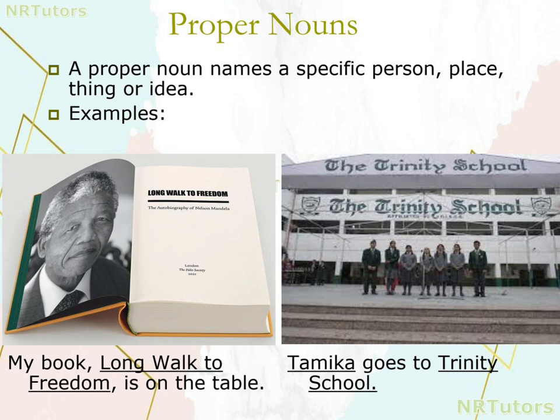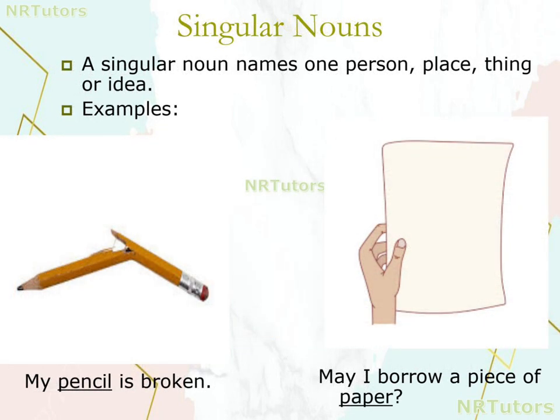The next one is singular nouns. A singular noun names one person, place, thing, or idea. Singular noun हमें एक ही person, place, thing, या idea के बारे में बताता है। Examples: 'My pencil is broken' — इसमें pencil singular noun है। 'May I borrow a piece of paper?' — इसमें paper एक singular noun है।